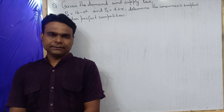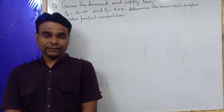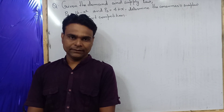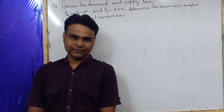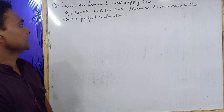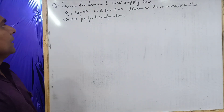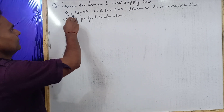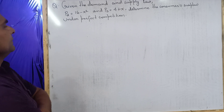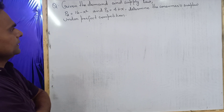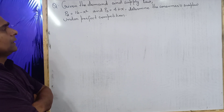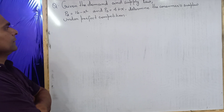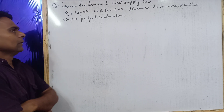Basically in this video, we will learn how to derive consumer surplus with the given demand and supply function. Given the demand function TD equal to 16 minus x squared, and supply function TS equal to 4 plus x, determine the consumer surplus under perfect competition.